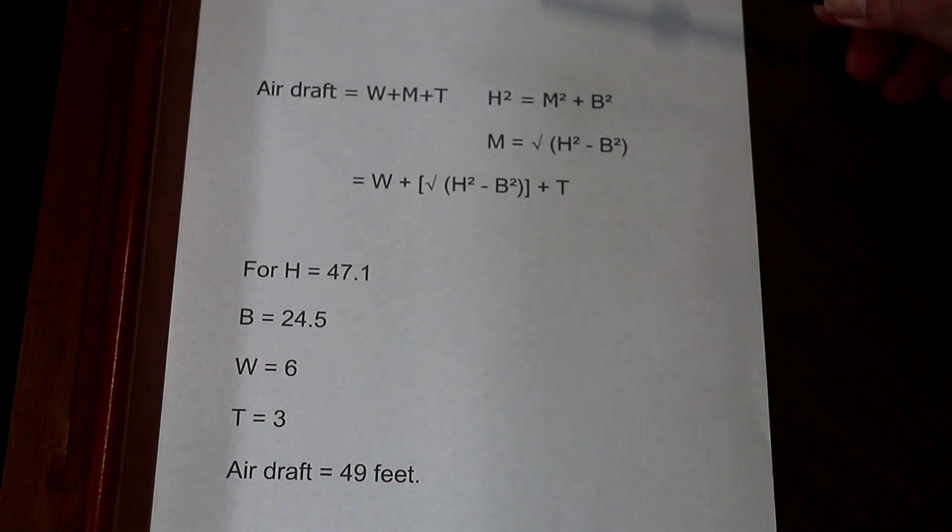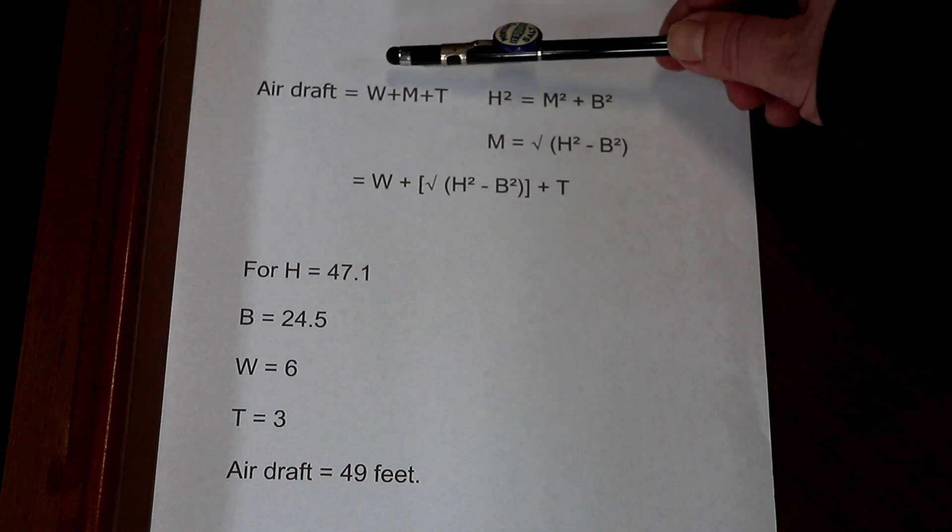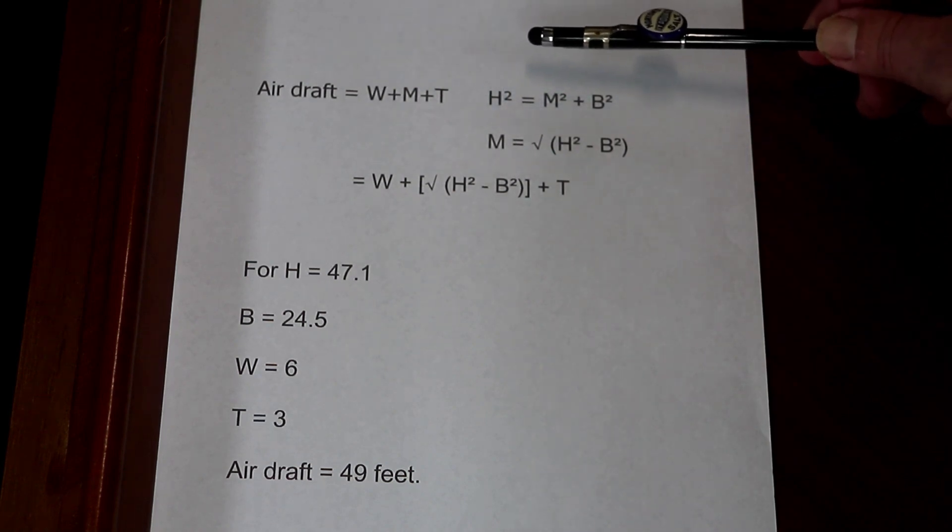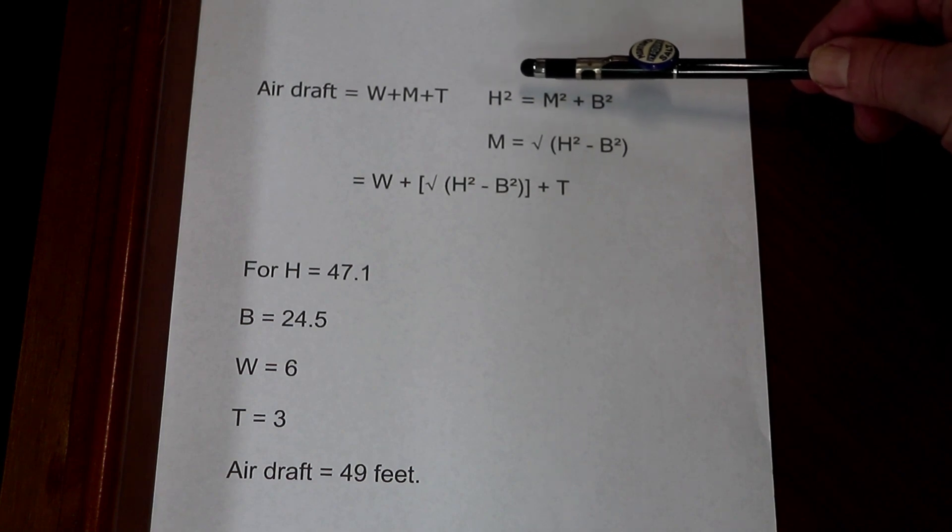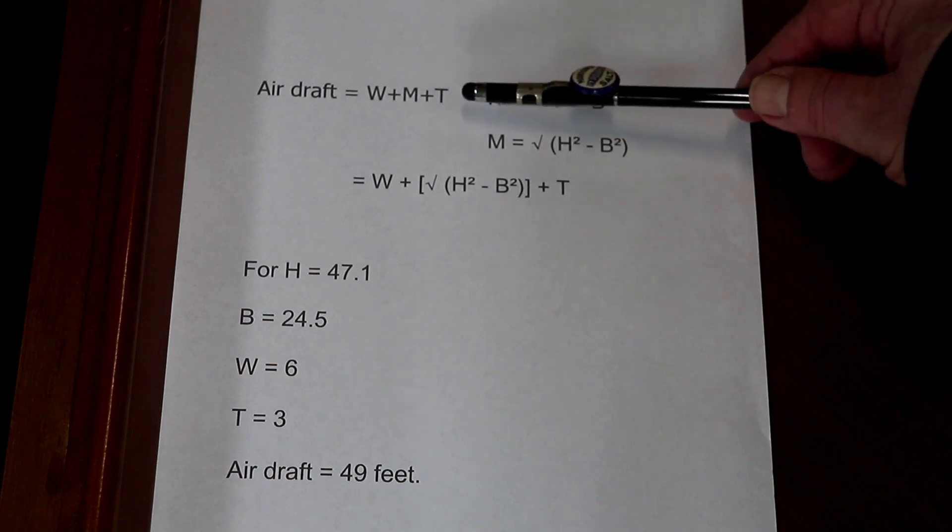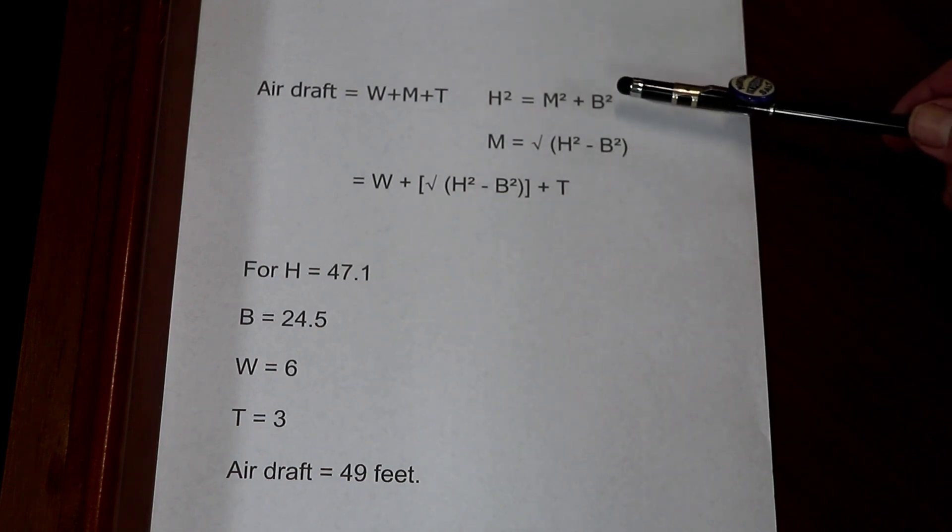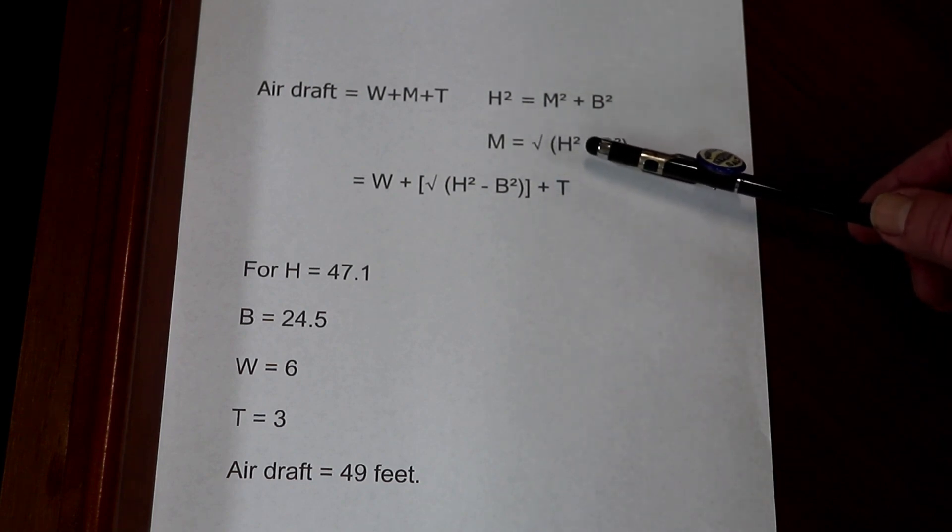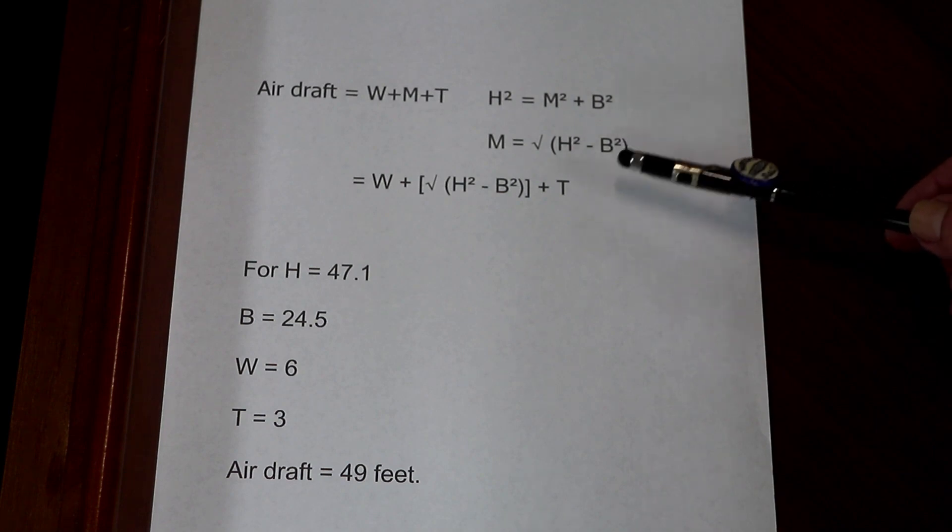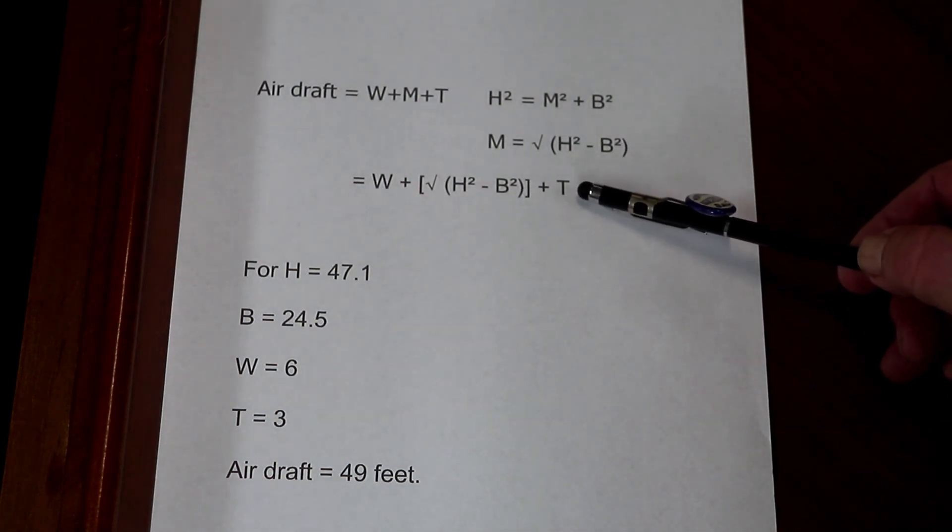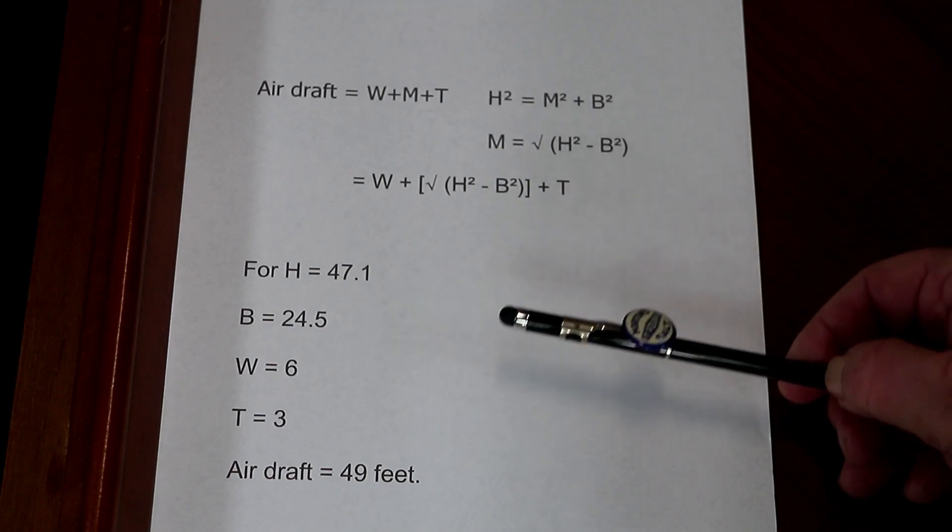This is just a quick review of the calculation. Air draft equals W plus M plus T, as we saw in the previous diagram. We know that the mast length from the deck to the top of the masthead comes from the Pythagorean theorem of right triangles. When we solve that for M, we get square root of H squared minus B squared. Put that into our original equation and we get W plus the square root of H squared minus B squared, plus T.